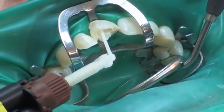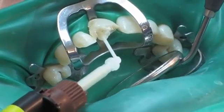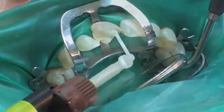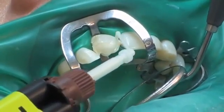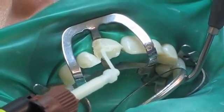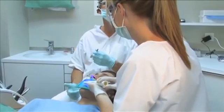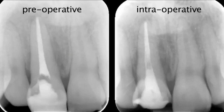Without any further delay, the core build-up can be fabricated. The non-slumping consistency of Paracore allows for free-hand modelling of the core build-up and direct application onto the prepared tooth structure and retention head of the root canal post. The core build-up is light cured afterwards for 20 seconds per side. An intraoperative radiograph is taken showing the glass fibre post cemented in place.